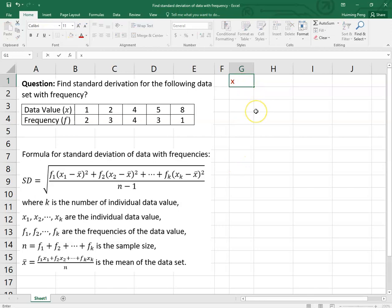Let me type the x's here. So what is x? 1, 2, 4, 5, and 8. Let's put the frequency in this column, so I put f here. f is 2, 3, 4, 3, and 1. Make sure our data are correct: 1, 2, 4, 5, 8 and 2, 3, 4, 3, 1. Yes.